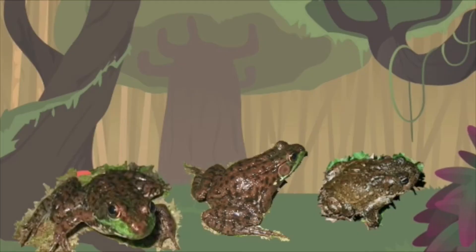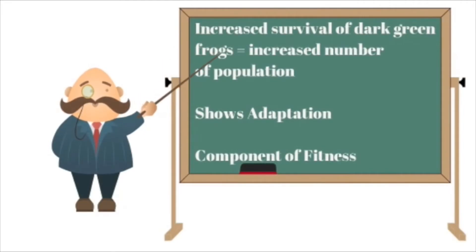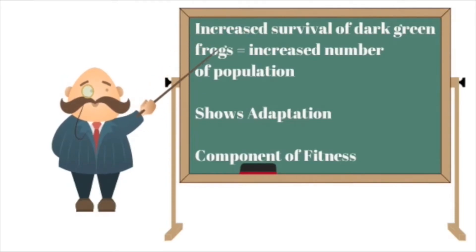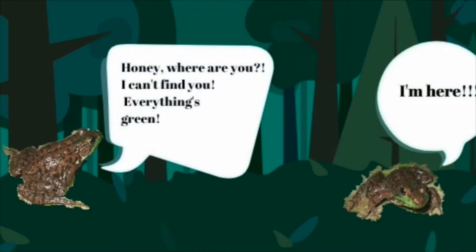Skin color in frogs is a heritable trait. The increased survival of dark green frogs means an increase in number of these frogs in the next generation, showing evolution by natural selection due to adaptation. The ability of dark green frogs to survive is a component of fitness — the measure of how well organisms survive and reproduce. Though some traits help an individual survive, trade-offs also occur. For example, though the darker frog's skin color helps it blend with its environment, it might be less attractive to potential mates.